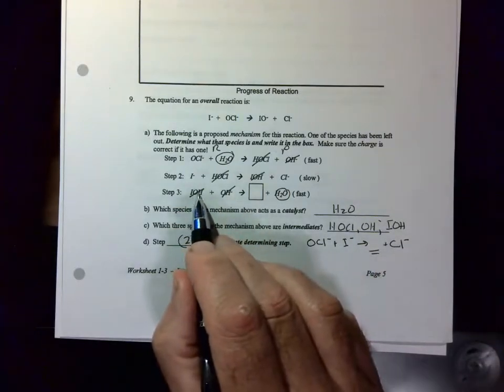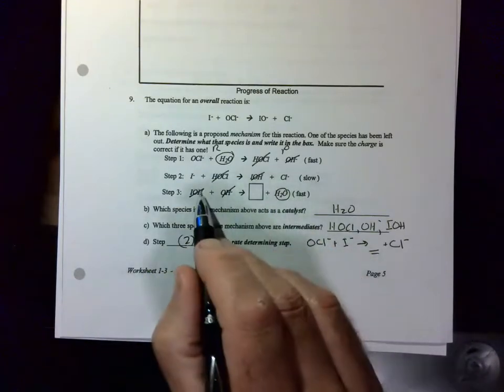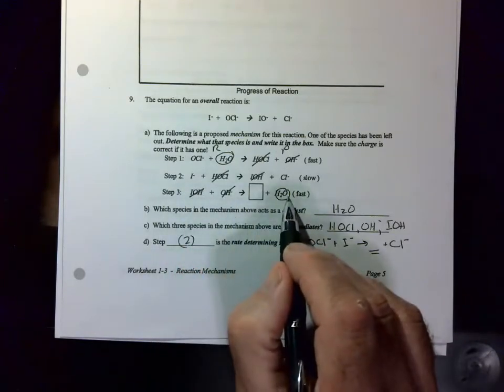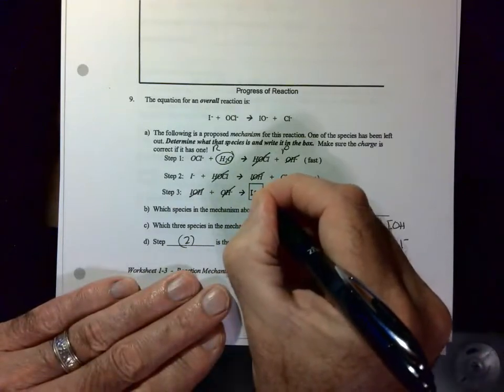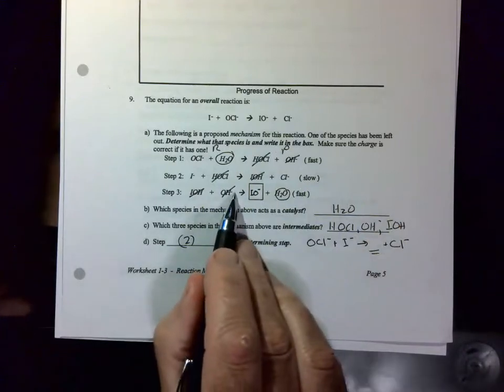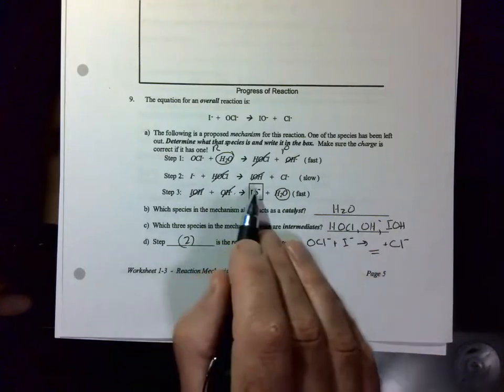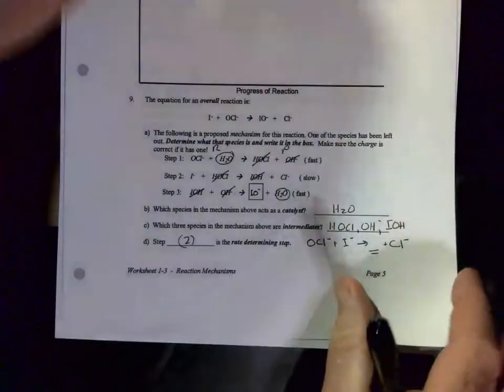The other way of doing this problem is just to look at step three. Every reaction has to be balanced. So we've got IOH, OH over here, and H2O over here. What is missing? An I, an O, and a negative because we have a negative charge on the reactant side. So you could look at the overall reaction to try and figure out what was missing there, or all you really have to do is take a look at step three.